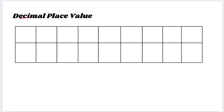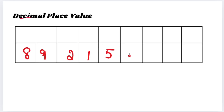I will give one example, then I will write down what is the place value. We will write in which place each digit is situated. The example number is 8, 9, 2, 1 — then a point, because this is a decimal — followed by 3, 5, 4.